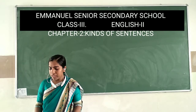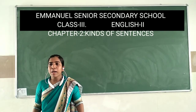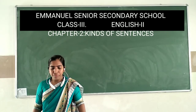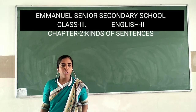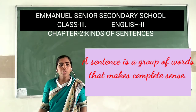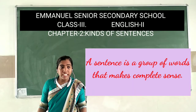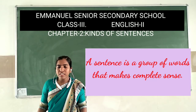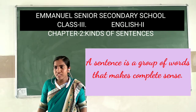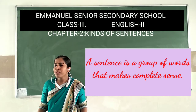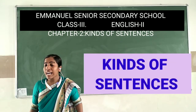Today we are going to discuss from the English grammar book. This is the English grammar book, and from this, Chapter 2. What is the name of Chapter 2? Kinds of Sentences. In the first chapter we learned what is a sentence — a group of words that makes complete sense. Now in this chapter we are going to discuss about the kinds of sentences.